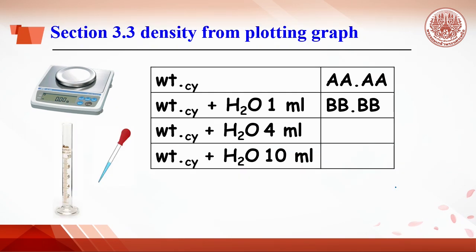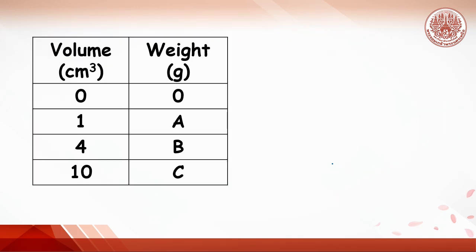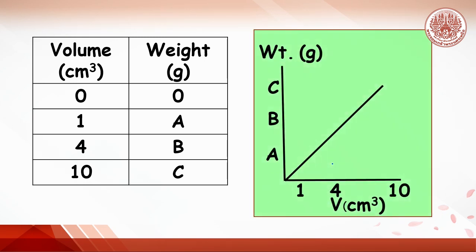The average density of water can be obtained from several measurements at volumes of 1 ml, 4 ml, and 10 ml with corresponding weights. A fit curve is made between volume and weight. The linear line should pass through the origin (0, 0). The density is calculated from the slope of the linear line. Write the equation showing the linear relationship between volume and weight.